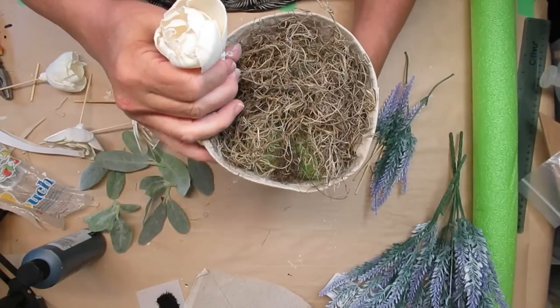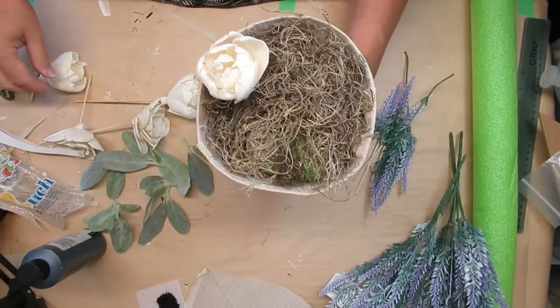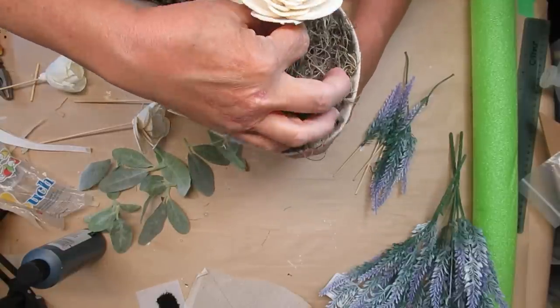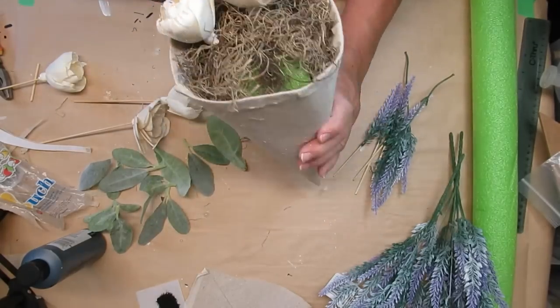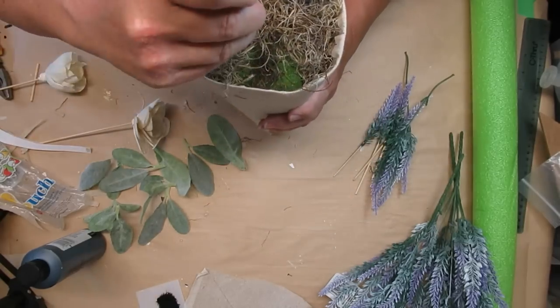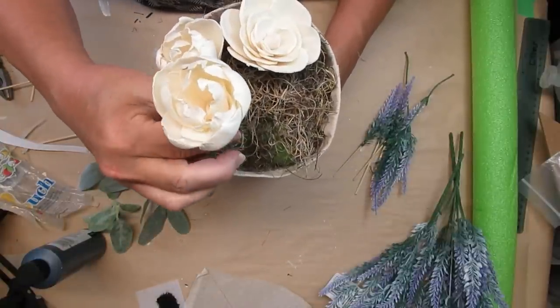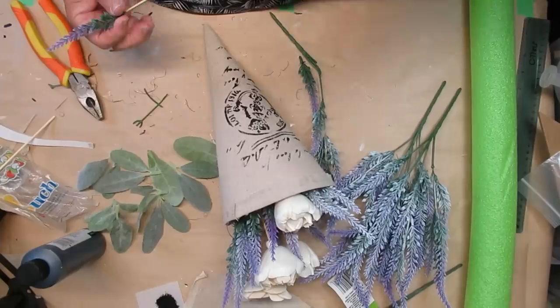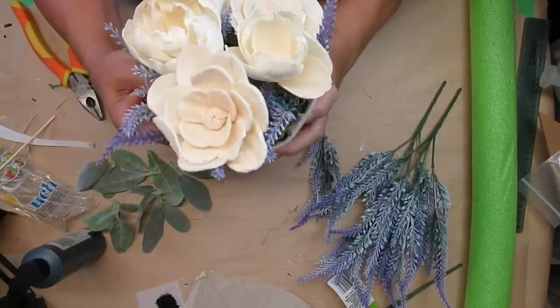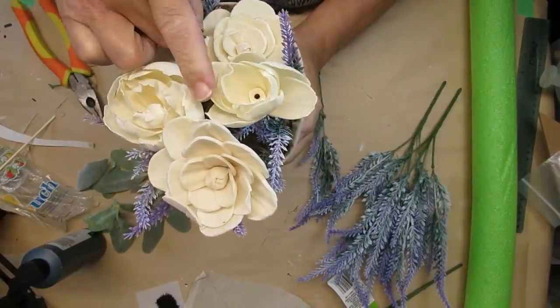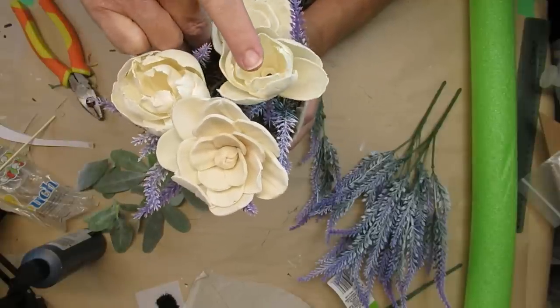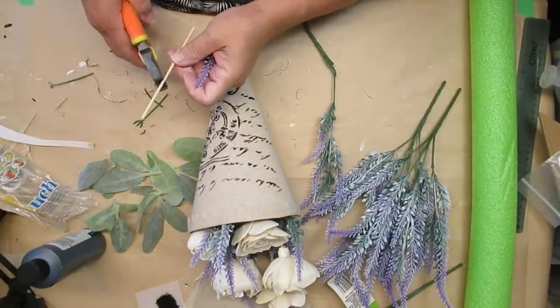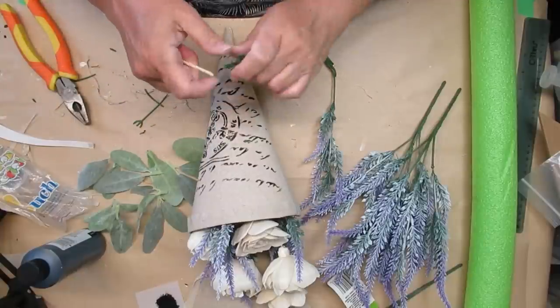For this arrangement I'm using some lavender that I gave a light dusting of white spray paint to, some beautiful solar wood flowers, and a little bit of lamb's ear. I added bamboo skewers to the solar wood flowers and pushed those into the bottom. Some are shorter than others because I wanted some at the bottom and some standing up towards the back. I'm using the lavender as filler and adding lamb's ear around the perimeter. I think this turned out beautiful.